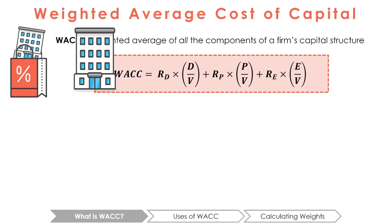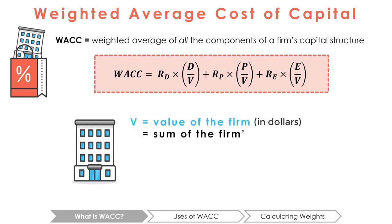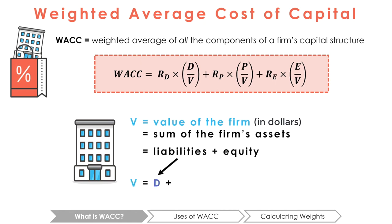The value of the firm, as denoted by V, is equal to the firm's assets. Recall that assets equals liabilities plus equity. Therefore, V is equal to D plus E plus P.